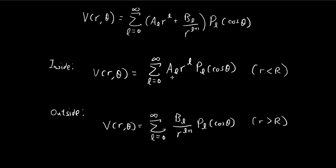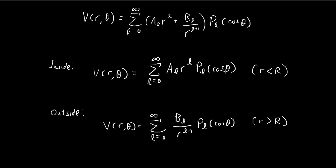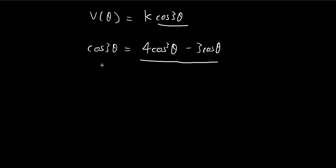We need to find the constant A_l. What we've been given is that on the surface of the sphere we have a potential equal to this expression. In order to find A_l, we're going to have to use Fourier's trick. To do that, I need to express this in a different way. Cosine 3θ is actually equal to 4 cos³θ minus 3 cosθ — you can prove this using double-angle formulas, which I won't do here.